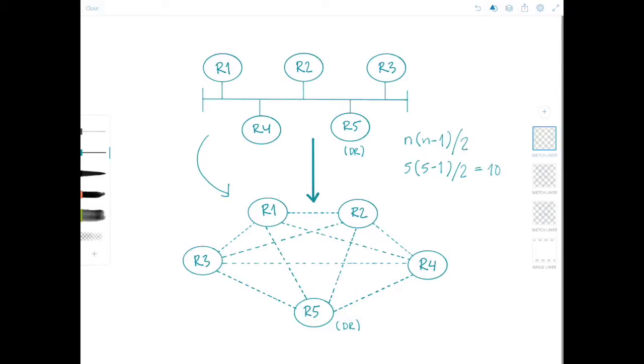And similarly, for 10 routers, there would be 45 adjacencies. So that would be 10 times 10-1 divided by 2, and that's 45. Isn't that crazy? So you can see the number of adjacencies quickly goes up as more routers are added to the network.